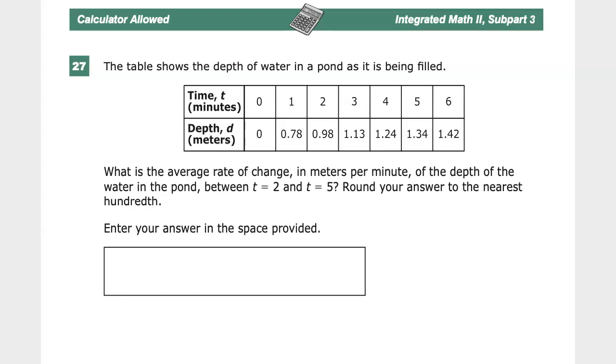The table shows the depth of water in a pond as it is being filled. What is the average rate of change in meters per minute of the depth of the water in the pond between T equals 2 and T equals 5? So that's 2 minutes and 5 minutes. Round your answer to the nearest hundredth.